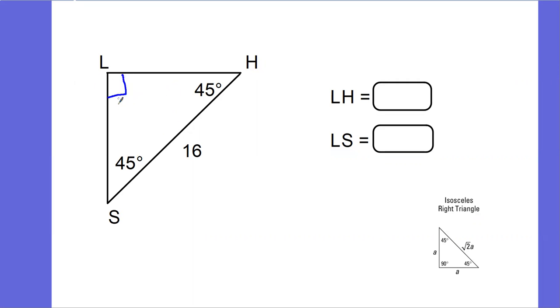So I have 45-45. This has to be 90. This is my right angle, and I know my side across my right angle is the 16, and my relationship is, once again, that for every A units that I have across from my 45s, I know that across from my 90 is just root 2 times that value.